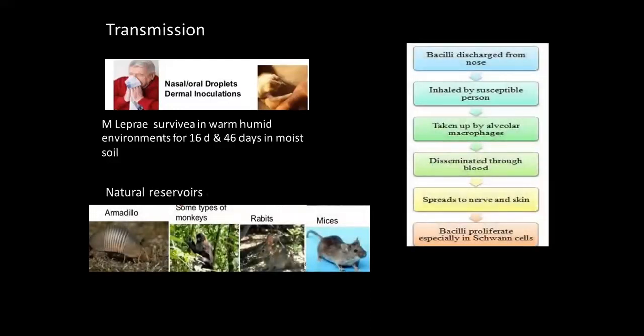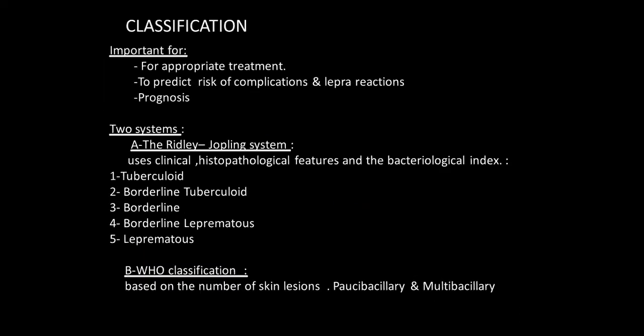Bacilli discharged from the nose are inhaled by a susceptible person, taken up by alveolar macrophages, disseminated through the blood, and spread to nerves and skin. Then the bacilli proliferate, especially in Schwann cells, which are the favourite cells of the bacilli. The incubation period is two to five years, and symptoms can take 20 years to develop.